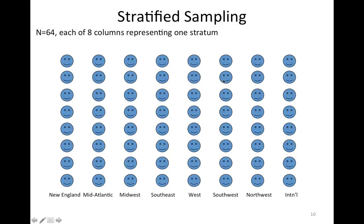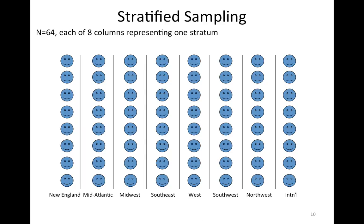Ideally the students I select would be representative of all Wellesley students in terms of these strata. So what I can do, if I want 16 students, is randomly select by simple random sample two units from each set of eight. I'm going to put the eight names of the New England students in a hat and draw two, the eight mid-Atlantic students in a hat and draw two. I do eight different simple random samples such that in each stratum two students are selected, and then the set of 16 across all strata makes up my overall sample.